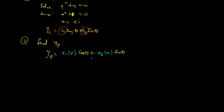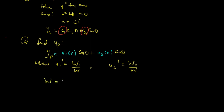To find u1 and u2, we use: u1' = W1/W and u2' = W2/W. Here W is the Wronskian of the two linearly independent functions, cos(θ) and sin(θ). To find the Wronskian, we write the matrix with cos(θ) and sin(θ) in the first row and their derivatives, -sin(θ) and cos(θ), in the second row.